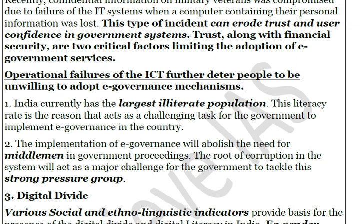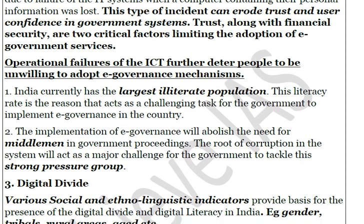There is also the issue of middlemen. Earlier, service delivery involved middlemen who acted between the government and citizens. With e-governance enabling direct government-to-citizen interaction, the role of middlemen is eliminated, cutting corruption. However, these middlemen form a strong pressure group that actively resists the transition to e-governance and deliberately discourages citizens from adopting electronic mechanisms.